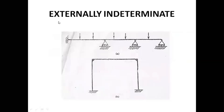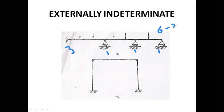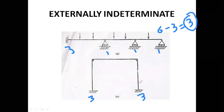For an externally indeterminate structure example: the support reactions are three at one support, one at the next, one at the next, and one more — totaling six. Six minus three equilibrium equations gives three. So this structure is externally indeterminate to a degree of three, because the indeterminacy is due entirely to the support reactions.